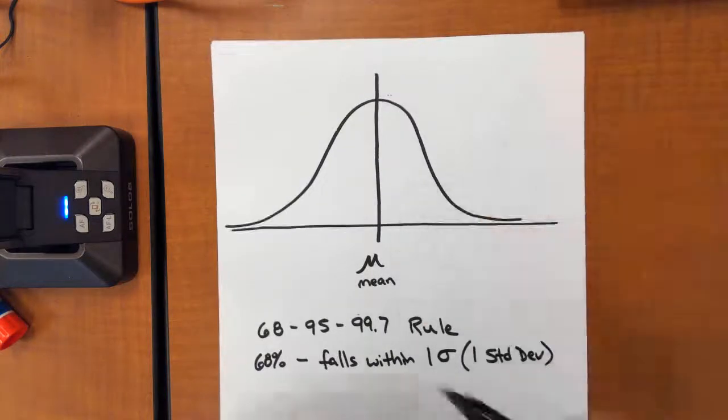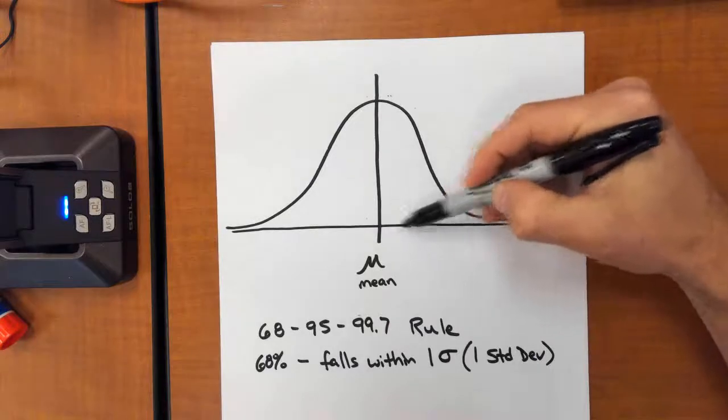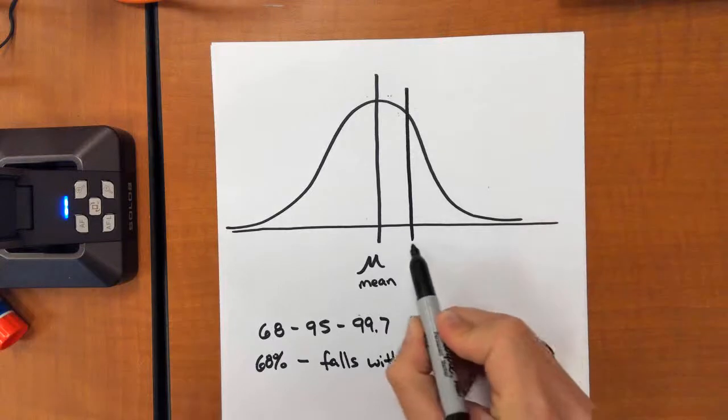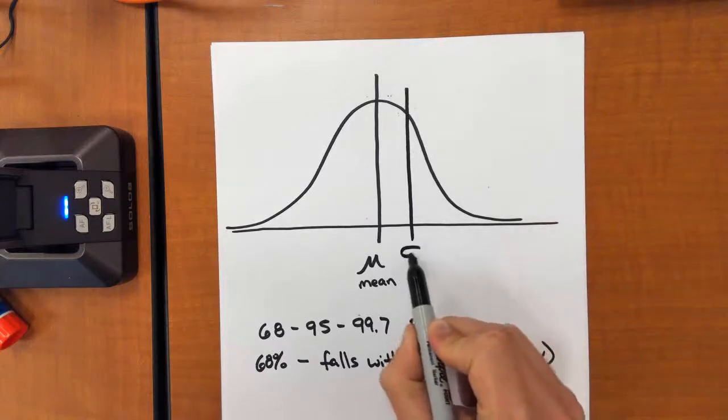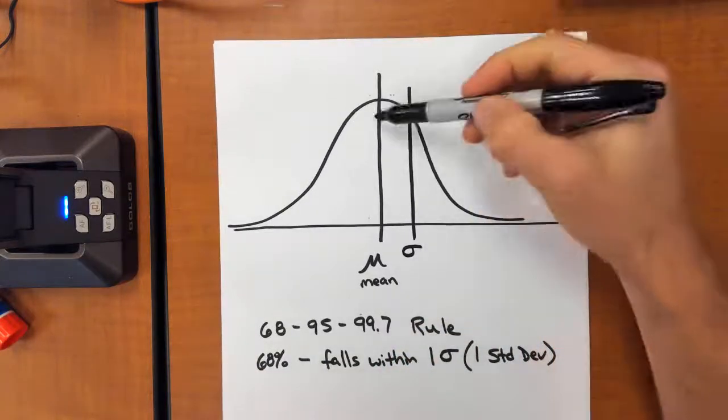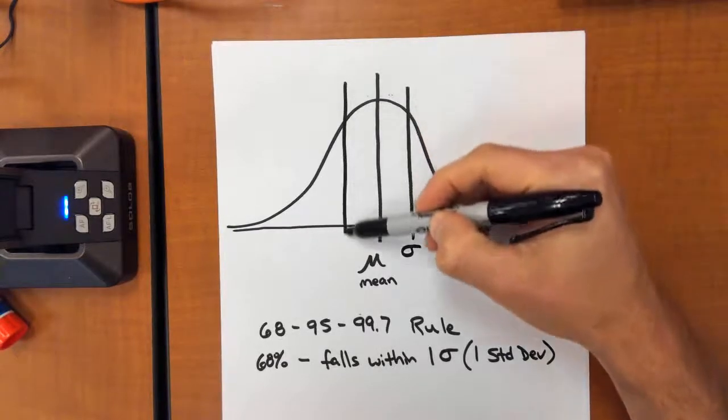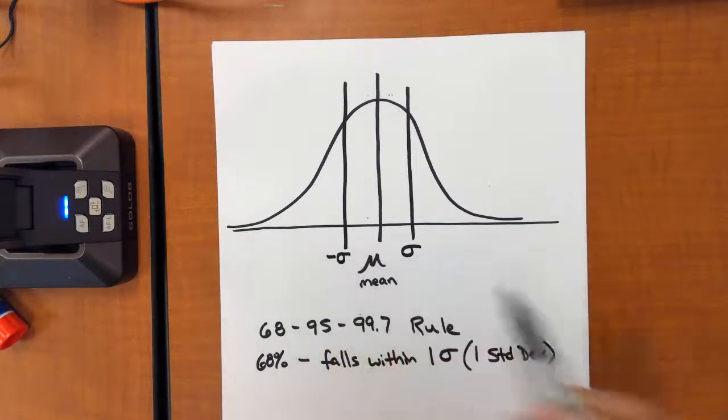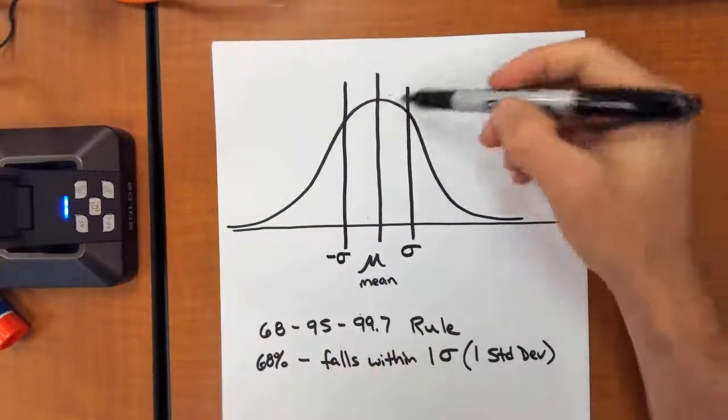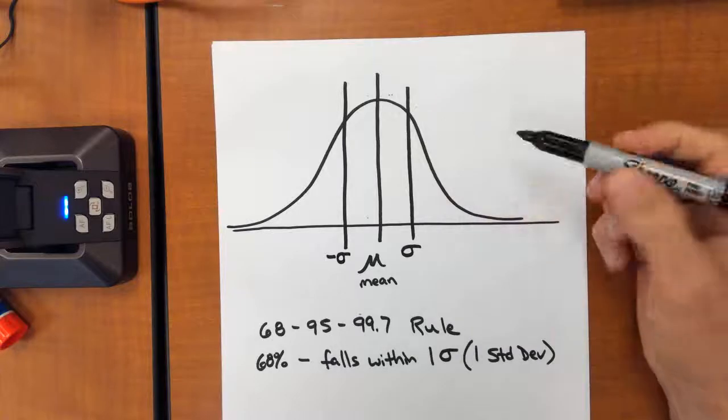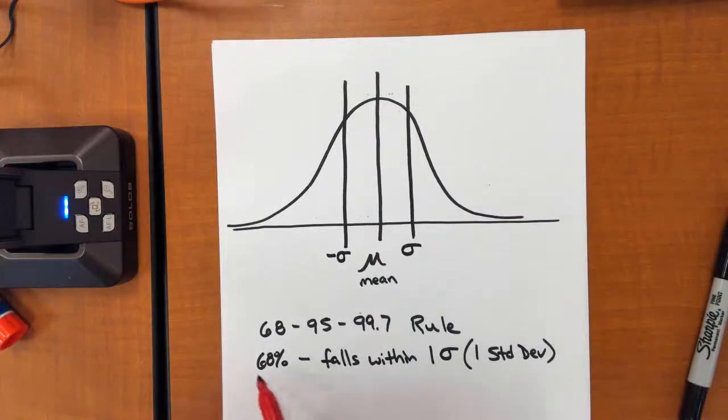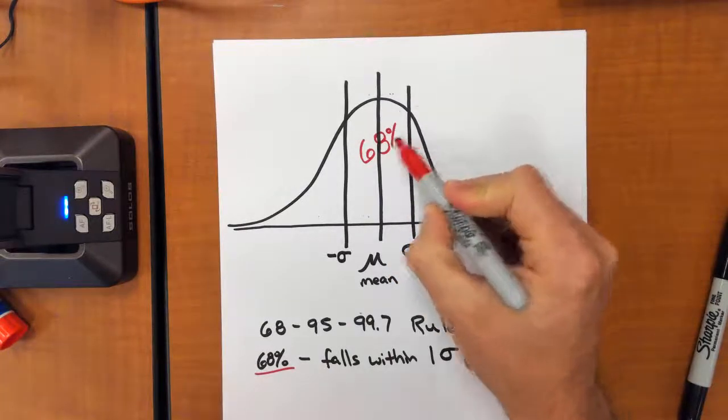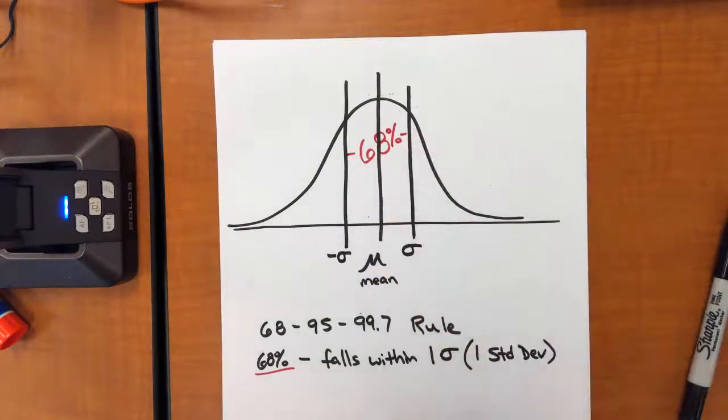So whatever that value is, it would be a number. On our x-axis here, if we would go over one standard deviation to the right, and one standard deviation to the left, minus standard deviation, this would be plus the standard deviation, that within here, we would find 68% of our values.